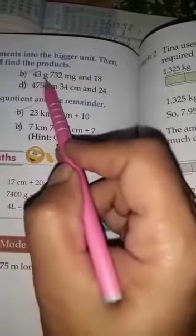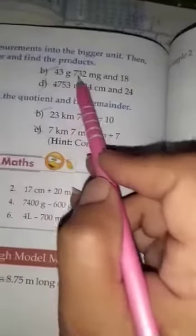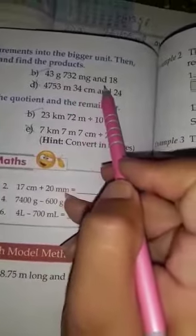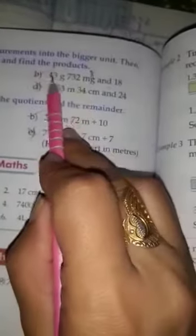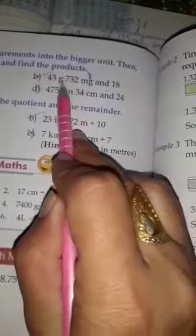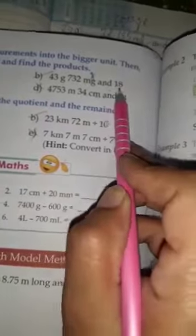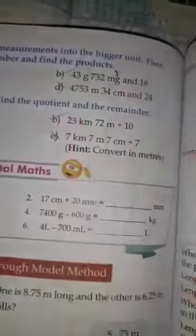Next, B sum, do by self. They are given 43 gram 732 milligram and 18. Then that milligram convert into gram. First, convert into gram, then after that do plus. Then after which one answer came, then multiply with 18. That do by self.